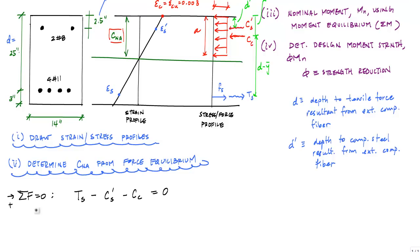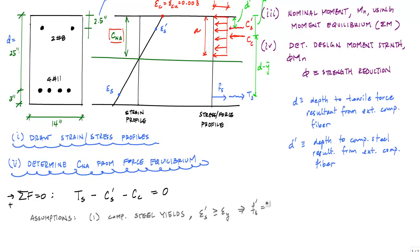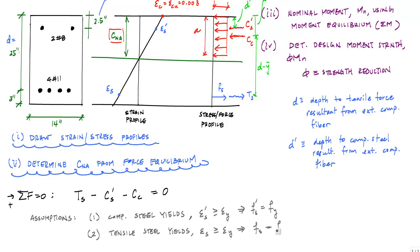Our first set of assumptions: one, we assume the compression steel yields, meaning epsilon S prime is greater than or equal to the yield strain, which implies the stress Fs prime equals Fy. Two, we assume the tensile steel yields, meaning epsilon S is greater than the yield strain, which implies Fs equals Fy.